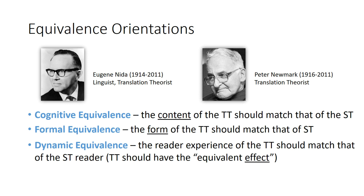Cognitive equivalence is a given — we always want to communicate the same content and message. Formal equivalence means the forms and structures of the target language should match those of the source text, so if placed side by side they'd look very similar on the surface. Then there's dynamic equivalence: the idea that the reader's experience of the target text should be the same as their experience of the source text — the target text should have an equivalent effect. These are three types of equivalence we can choose to prioritize when translating.